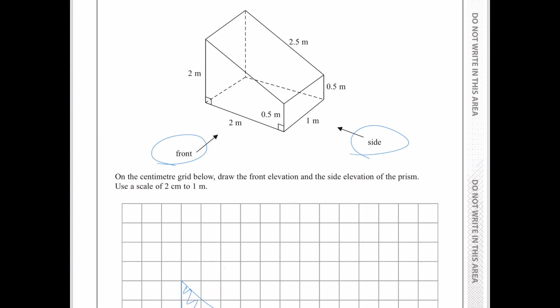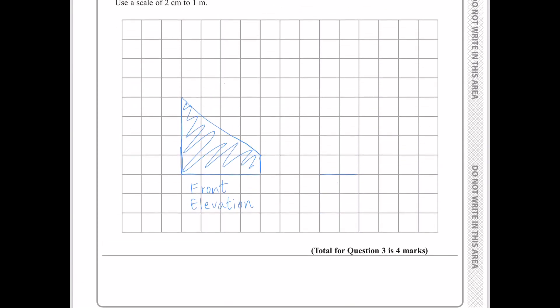Then, the vertical lines of the rectangle on the diagram is 2 metres. So, on the grid, it would be 4 centimetres.